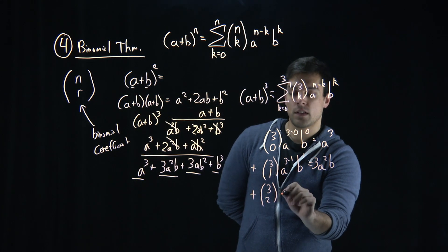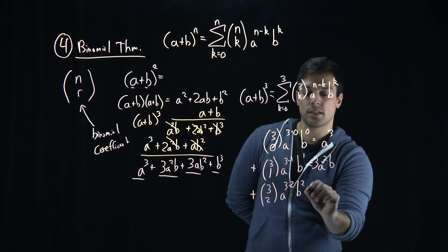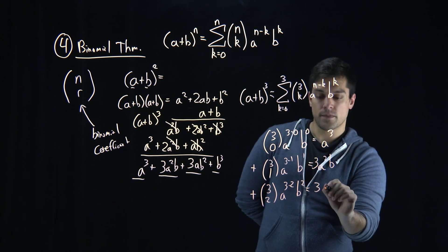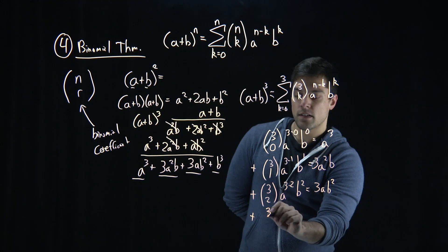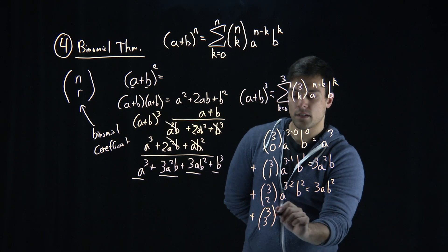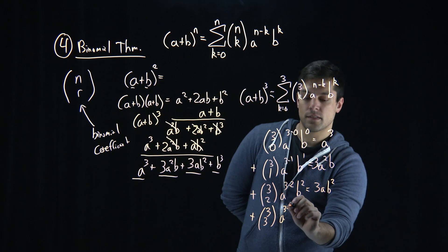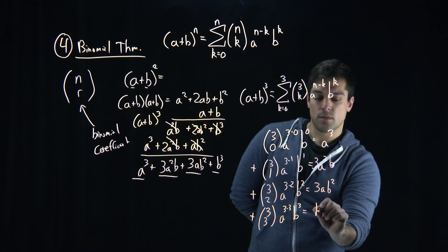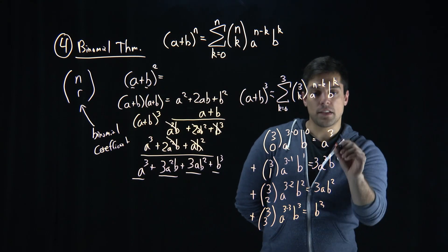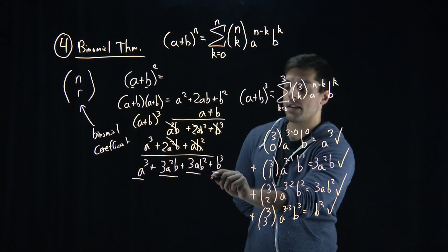3 choose 2, we have a to the 3 minus 2, b squared, which is 3 a b squared. And then finally, 3 choose 3, which is, well our a goes away, 3 minus 3, and b to the k is 3 now, b cubed. So if I look, all of these terms match what we previously had here.